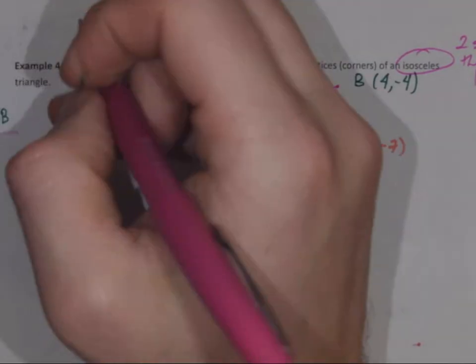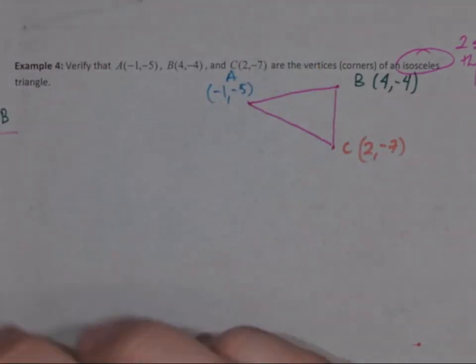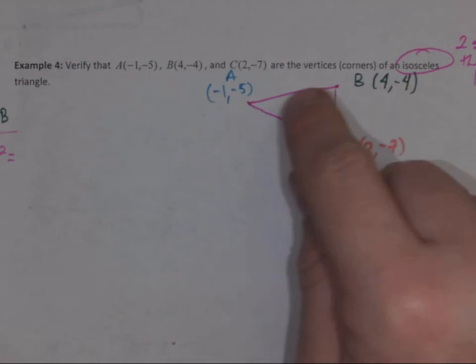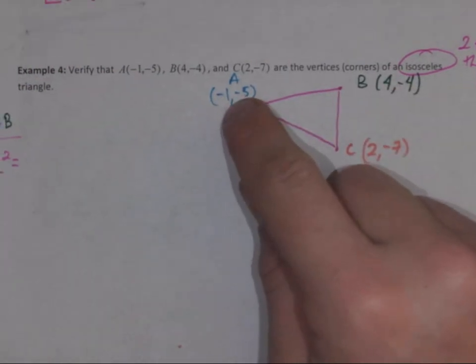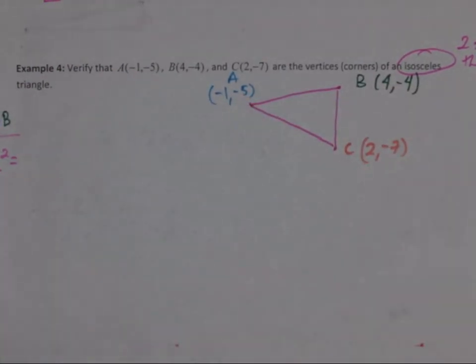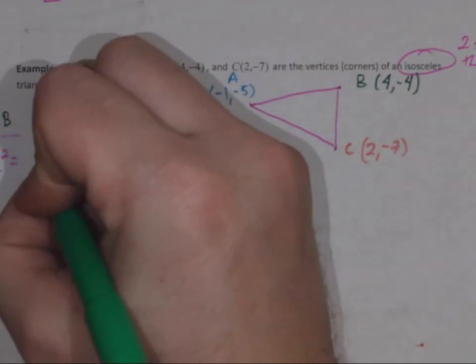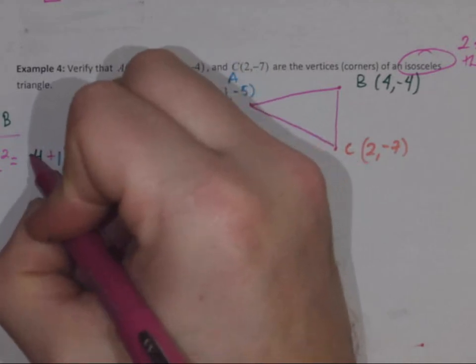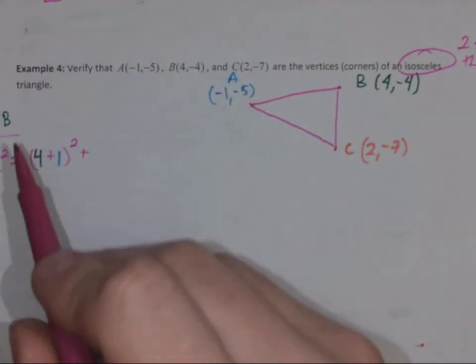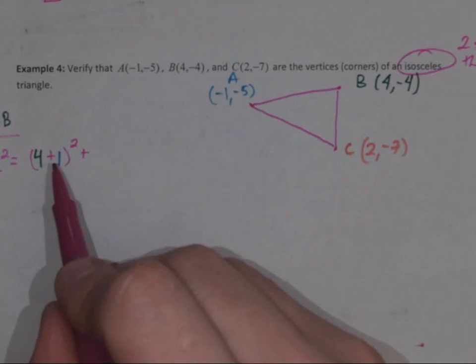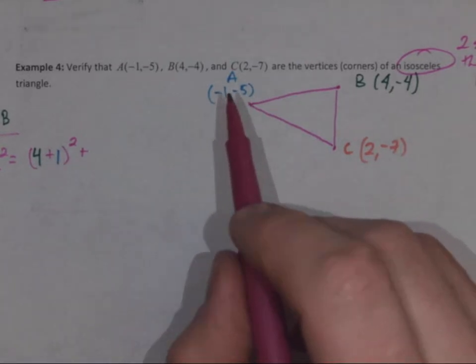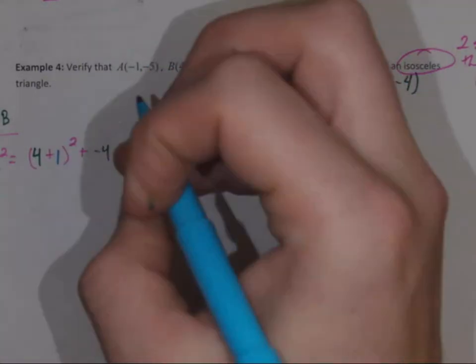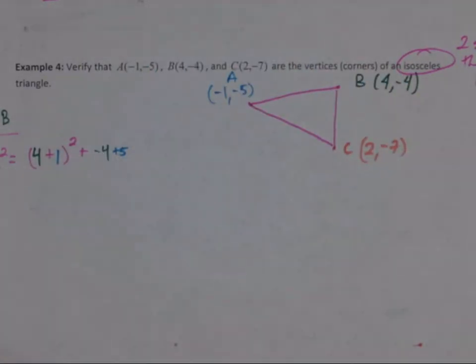Four minus negative one, that's going to be four plus one, all squared, because that's minus negative one. And we're going to have negative four minus negative five, which is going to be negative four plus five, all squared.